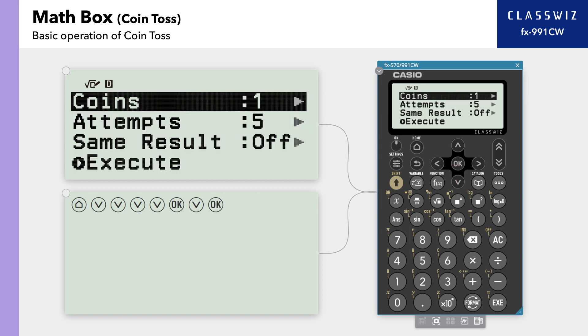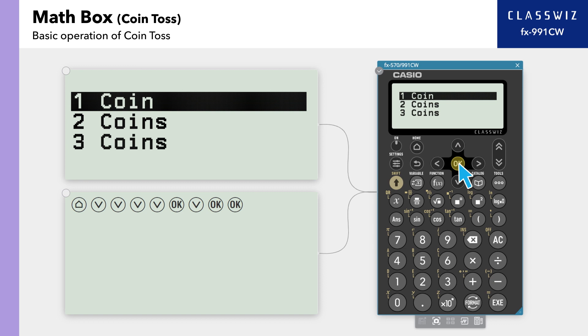For coins, choose how many coins to toss. You can choose 1, 2, or 3. In this example, let's choose 3 coins.